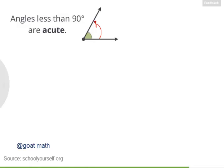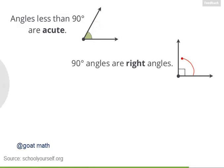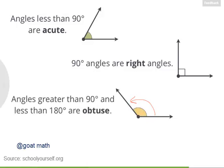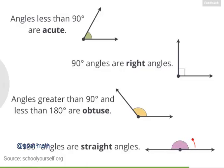So to summarize: angles less than 90 degrees are called acute, 90 degree angles are right angles, and angles between 90 degrees and 180 degrees are called obtuse. And by the way, 180 degree angles are also known as straight angles, because they're the angle in a straight line.